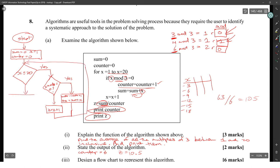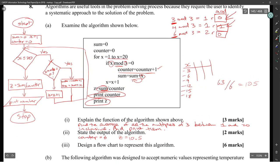Then it's going to loop back up. And when it's all done, it's going to say z equals sum divided by counter. And then we're going to print counter, which is going to be a parallelogram, and then print z, and then we're going to stop. That looks like it. That's the answer for six marks.